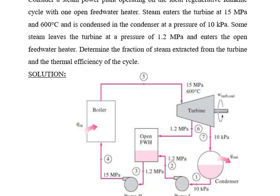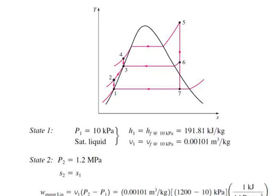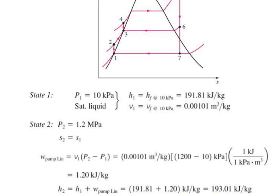First, draw the T-S diagram, locate all state points on the saturation curve, and identify process paths 1→2, 2→3, 3→4, 4→5, 5→6, 6→7. State 1: P1 = 10 kPa, saturated liquid. From the steam table, H1 = 191.81 kJ/kg and V1 = 0.00101 m³/kg. State 2: P2 = 1.2 MPa, entropy same as state 1. W_pump1 = V1(P2 − P1) = 0.00101 × (1200 − 10) = 1.20 kJ/kg.